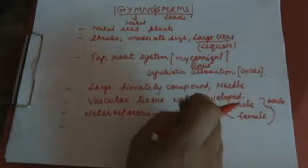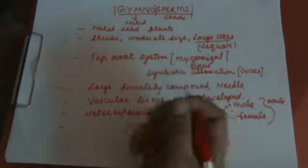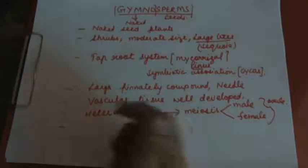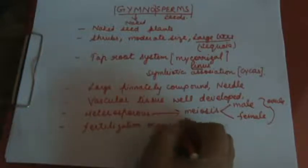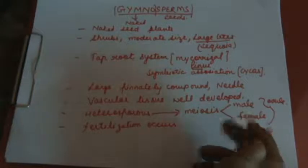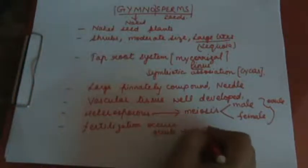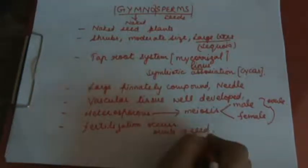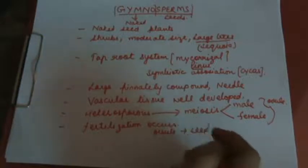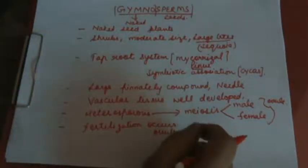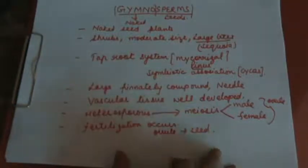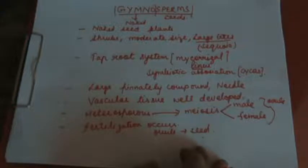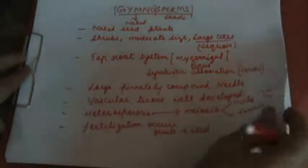A pollen tube, like in angiosperms, is formed and carries the male gamete towards the archegonia. Fertilization then occurs in the archegonia and the zygote develops into the embryo. The ovule is then transferred into the seed, which is responsible for the development of the seed habitat.